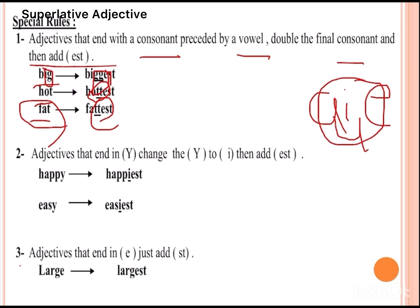Second special rule: adjectives that end with -y — change the y to i, then add -est. For example, 'happy' ends with y, so we delete the y and add -iest: 'happiest.' 'Easy' ends with y, so we delete the y and add -iest: 'easiest.' Third rule: adjectives that end in -e — just add -st.